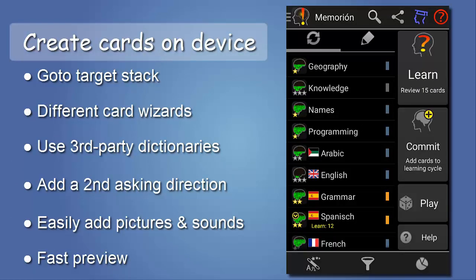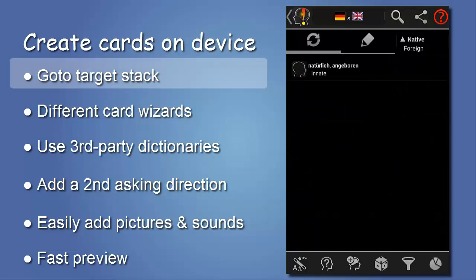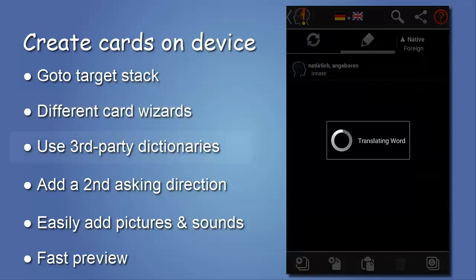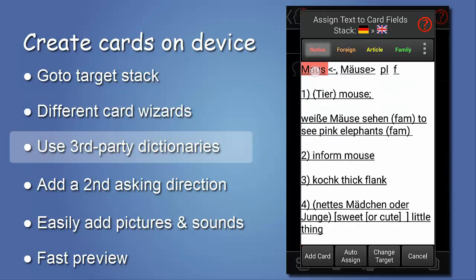Besides loading big chunks of cards from other sources, Memorion can also help you create cards on the fly — for example, while reading a foreign language book. For this, you first go to the stack where you want to add the card. The wizard also has other helpers to create cards based on spontaneous photo or audio recordings. But we will use a third-party dictionary from Poncier. Looking up the word, this dictionary offers too much information, but there are tools to pick just what we want.